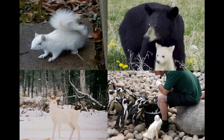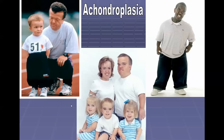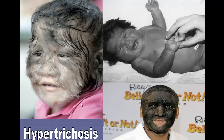Albinism can also occur in animals — here's an albino squirrel with red eyes, and also bears, an albino penguin, and an albino deer. Achondroplasia or dwarfism is dominant, so if it's passed along, generally all of the children are going to have dwarfism as well. Hypertrichosis is called werewolf syndrome because of the overproduction of hair in areas that most humans do not have hair — you can see a baby with lots of hair on their arm and forehead.